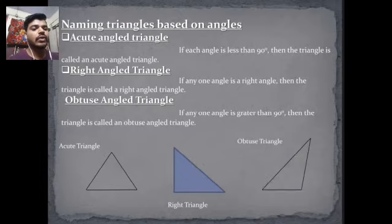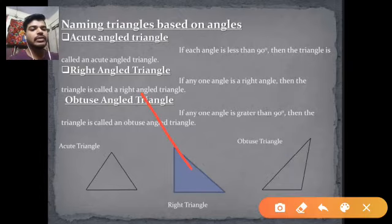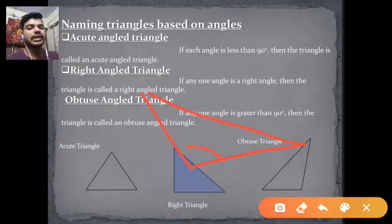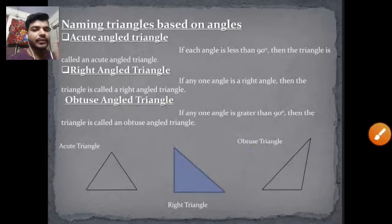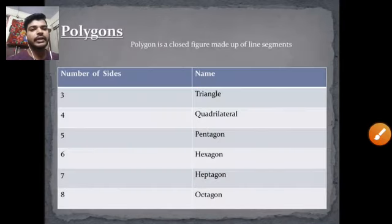You can also make an obtuse triangle where one angle is greater than 90 degrees. That is the obtuse angle triangle.